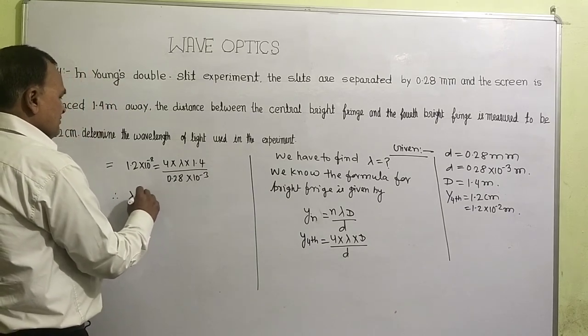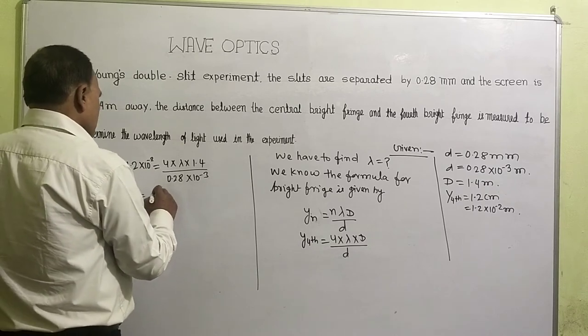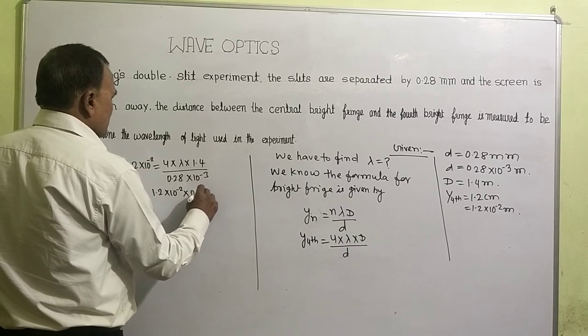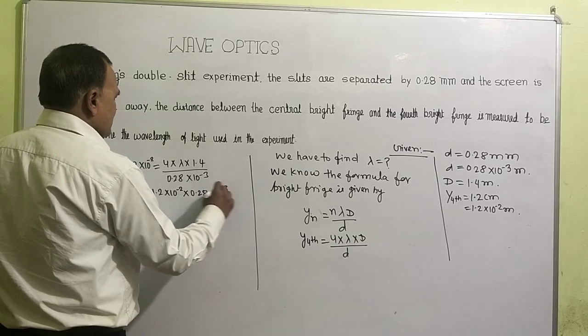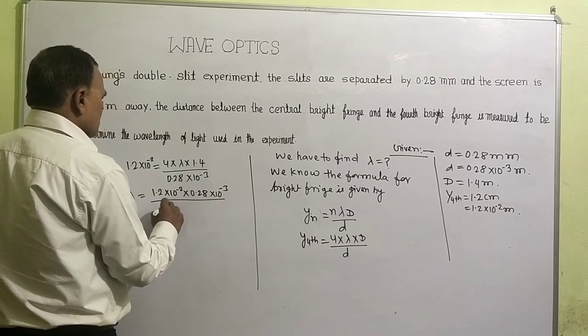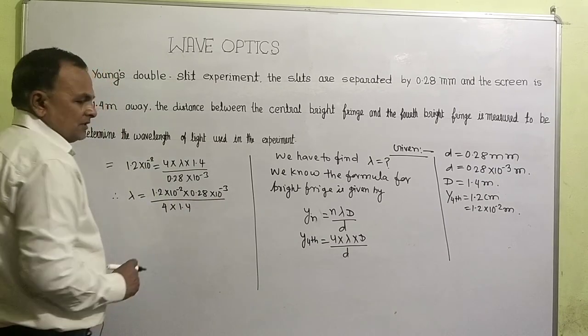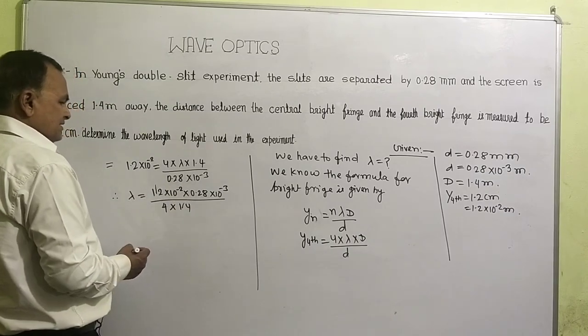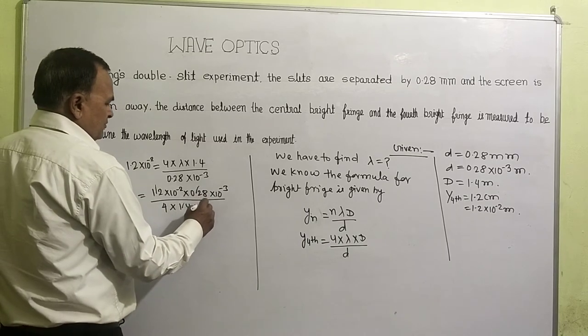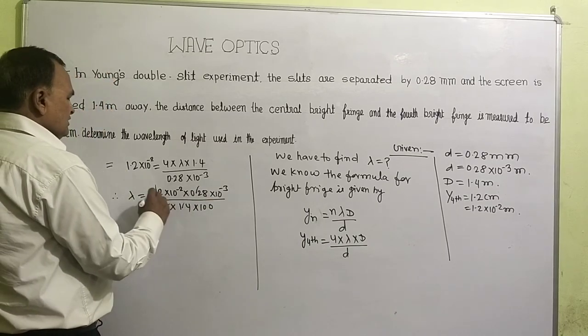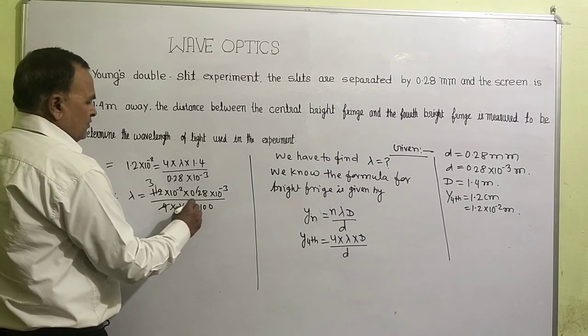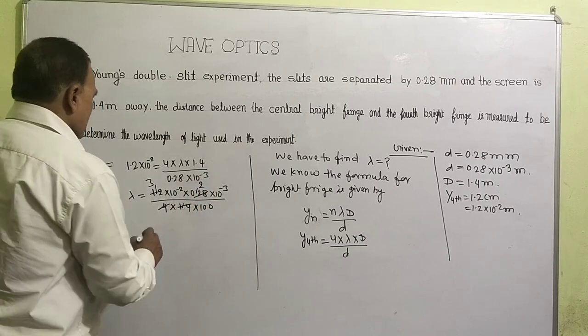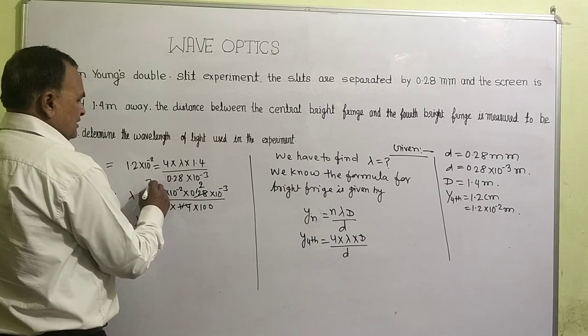Therefore by cross multiplication we get lambda equals 1.2 × 10^-2 × 0.28 × 10^-3 divided by 4 × 1.4. Now by replacing this decimal, multiplying 100, that means 12 and 28, 12 into 28.